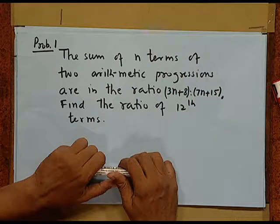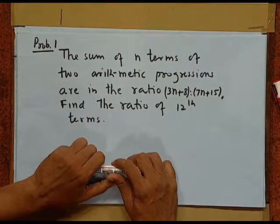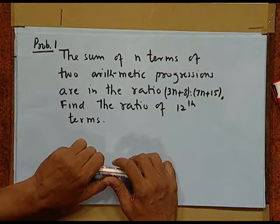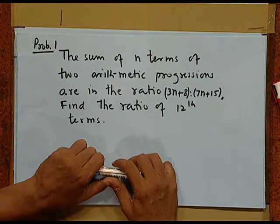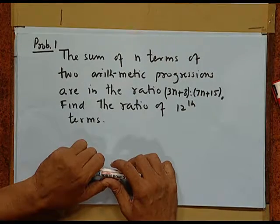The sum of n terms of two arithmetic progressions are in the ratio of (3n + 2) to (7n + 15). Find the ratio of the twelfth terms. Here, neither a is known nor d is known. Moreover, there are two series involved, which means we have four unknowns.